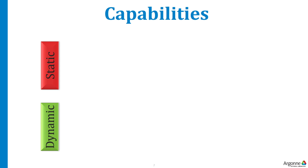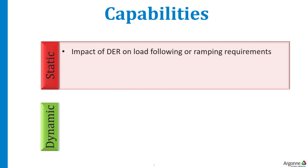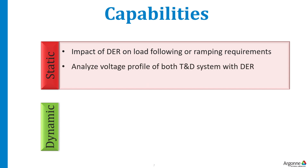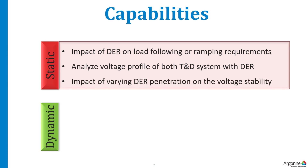People have used TD-Cosyn to run steady-state simulations and studied the impact of DERs on the load following or ramping requirements of the bulk power system throughout the day and over the course of the season. They have also analyzed the voltage profile of both transmission and distribution systems with varying levels of DER penetration, and the impact of different DER penetration levels on voltage stability of the bulk energy system using continuous power flow analysis.